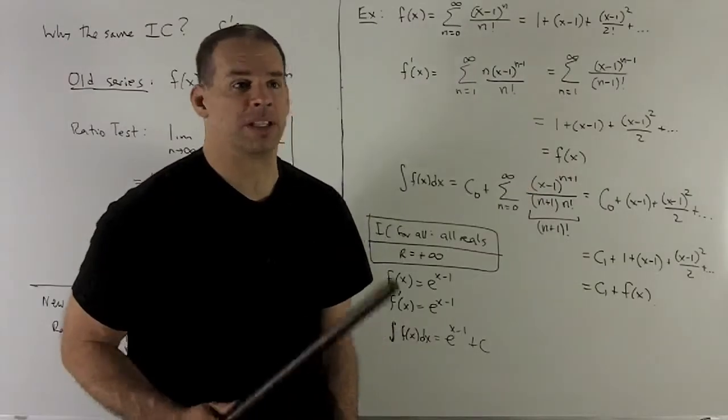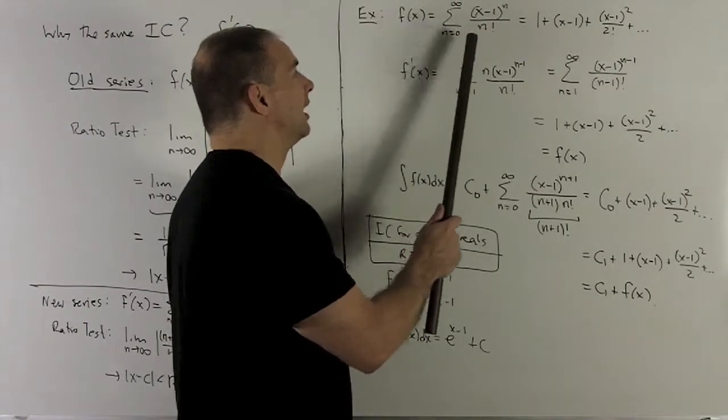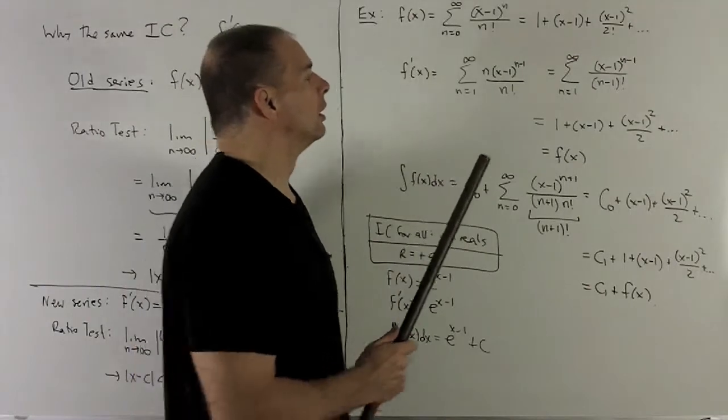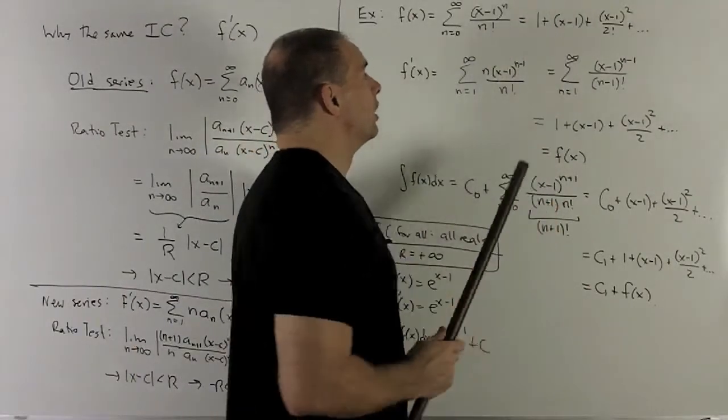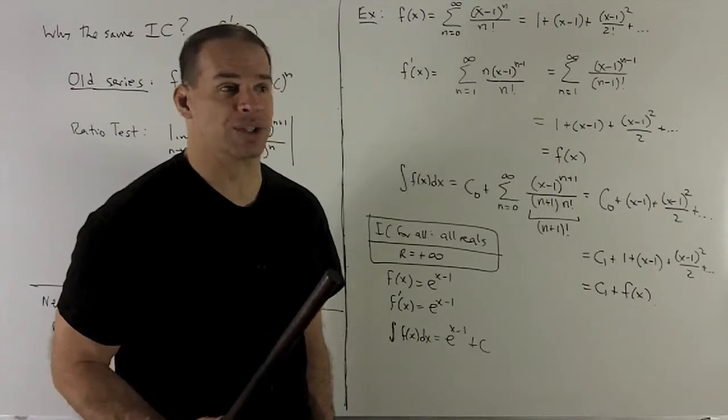For another example, let's consider f(x) equal to sum from 0 to infinity of (x-1)^n/n!. So here's the first few terms. Just remember that 0! = 1 and 1! = 1.